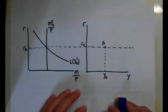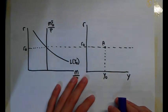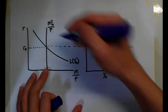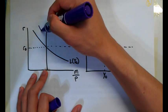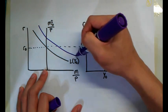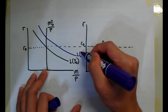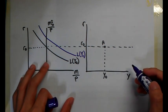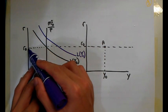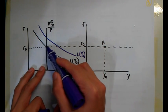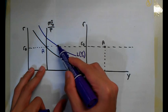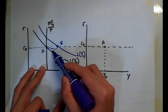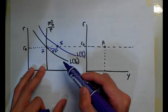So what I'm going to do is change income — I'm going to increase my income. When I increase my income, my demand curve is going to shift outwards to L(Y1). At this point, at this level of interest, we have moved from point A to point B, and as you can see, we have actually an excess demand for liquid assets.